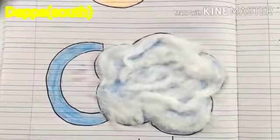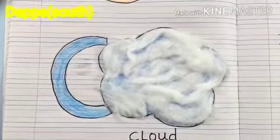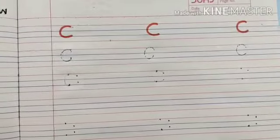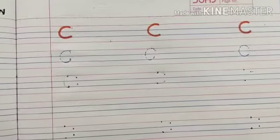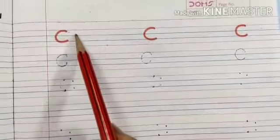Okay children. Now, see children. Our C for cloud is looking so beautiful. We are going to write letter C in our English notebook. And as we all know, there are four lines in our English notebook. So, you have to draw in the first three lines like this.